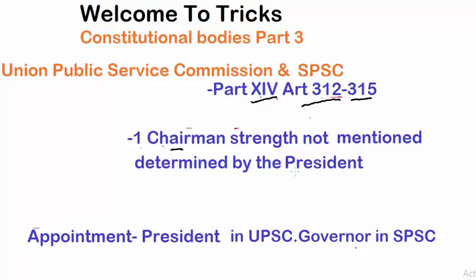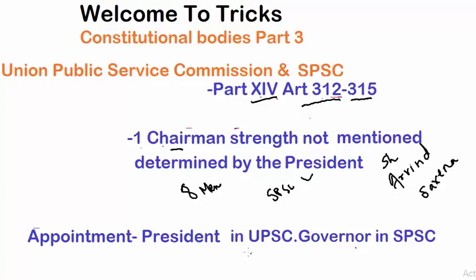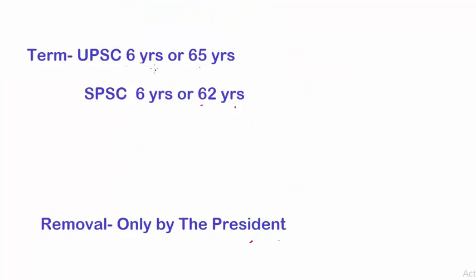The strength is determined by the President for UPSC and the Governor for SPSC. Currently there are eight members in UPSC. The current chairman of UPSC is Shri Arvind Saxena. The appointment of the members of UPSC and the chairman is done by the President, and in State Public Service Commission by the respective Governors of the state.